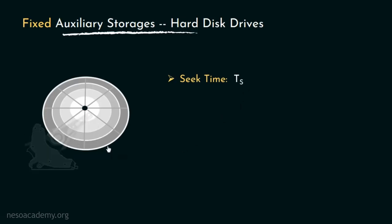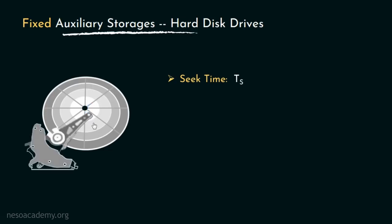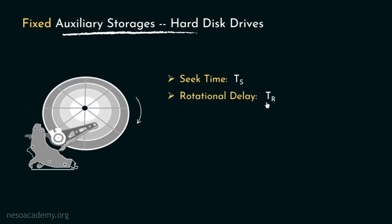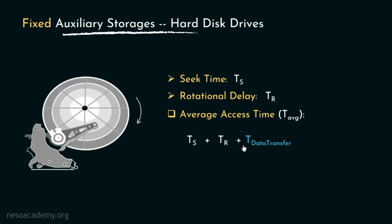Suppose at a particular instance of time we are reading or writing on a certain sector — so naturally the head will be at that position. Now say we want to perform a read or write operation on a different sector. The mechanism of the drive will rotate the disk and bring the sector within reach of the read-write head. The time required for this rotation is known as the rotational delay, or TR. In one rotational delay, the read-write head can read the entire track — that is, all the sectors of the track it's currently positioned on. So the average access time of hard disks is measured as: seek time (TS) + rotational delay (TR) + T data transfer, which is the time taken to transfer the data.